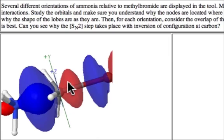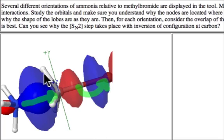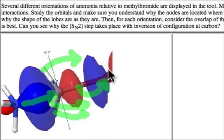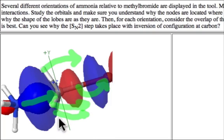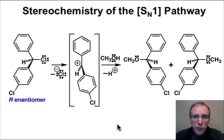As the nucleophile comes in, the bromine leaves, and at the same time the hydrogens on the carbon — or whatever the substituents happen to be — move over into the region where the bromine used to be. It's for that reason, this orbital requirement, that the reaction goes with an inversion of configuration, and it is stereospecific.